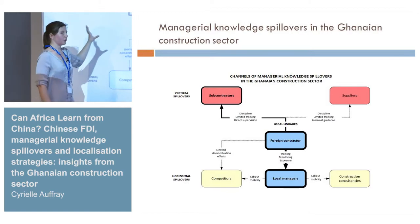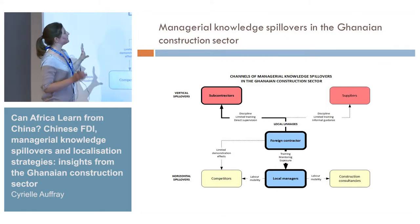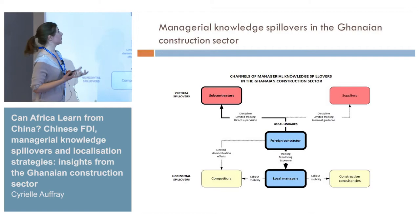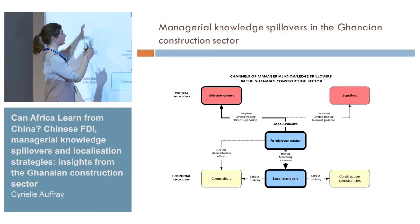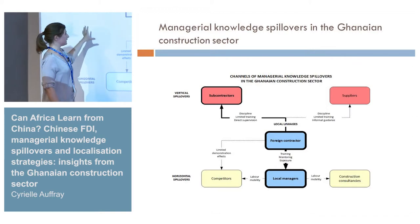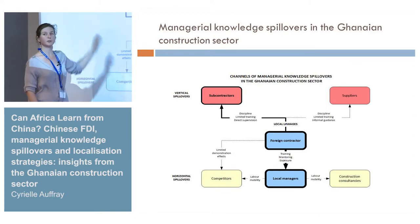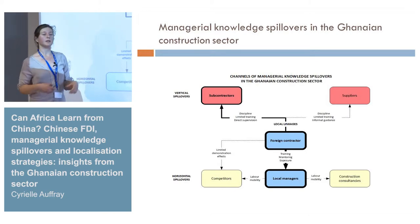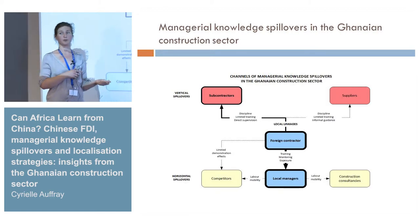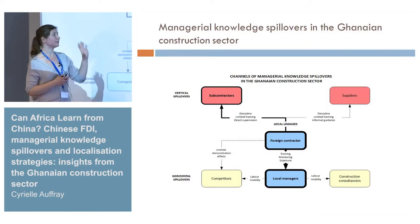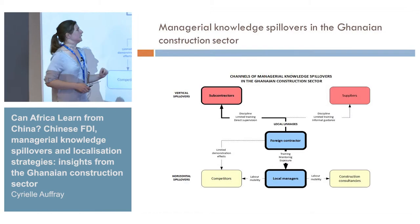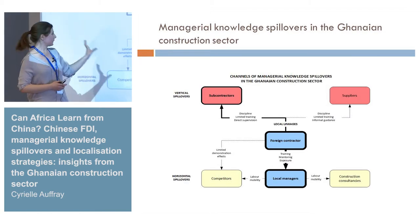Local linkages are another way for managerial knowledge to be transferred, and I distinguish between subcontractors and suppliers. Subcontractors are really important in the construction sector — it's one of the specificities of the sector. Through their interaction with foreign managers, they can also acquire some form of managerial knowledge. These spillovers are more important for subcontractors because they tend to work on site for an extended period directly under the authority of foreign managers. Suppliers, especially in Ghana's limited manufacturing sector, are mostly import companies with different processes and limited interactions with the foreign firm.